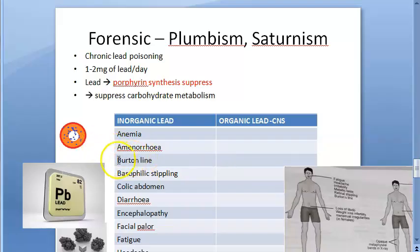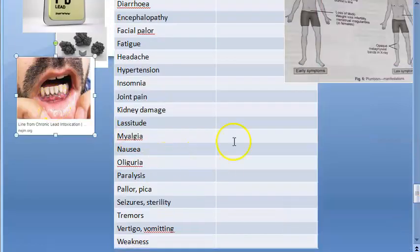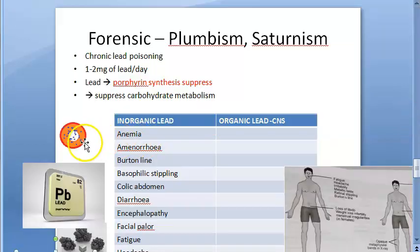What all are very specific here: Burton's line, basophilic stippling. This is Burton's line because of lead sulphide. This is basophilic stippling because of suppression in porphyrin synthesis.